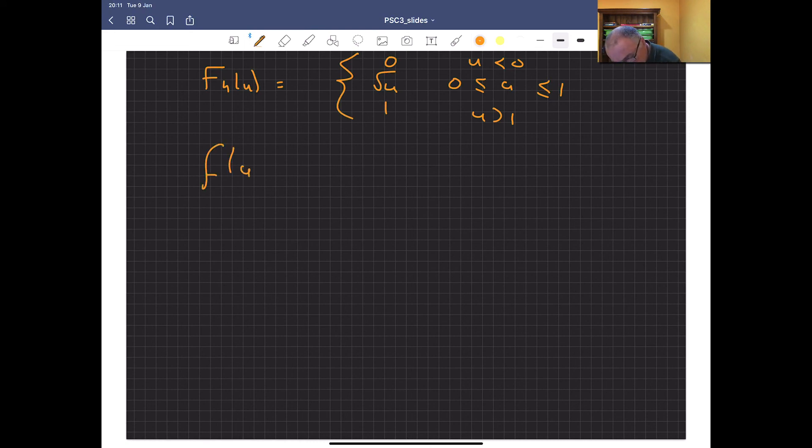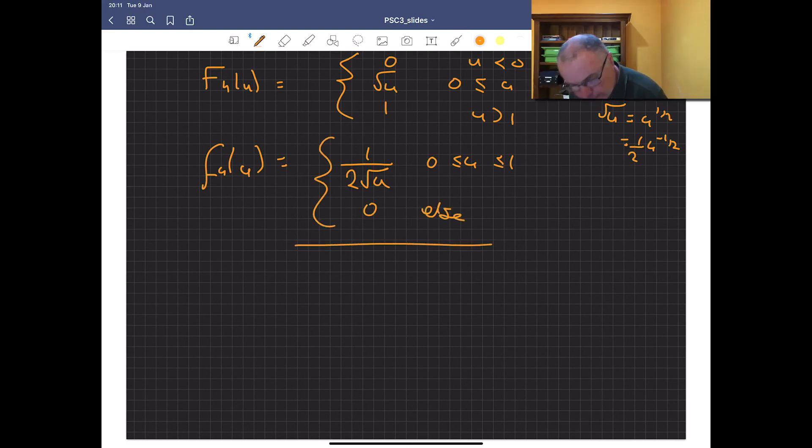And finally, let's get my PDF. I'm going to differentiate that. So we've got square root of U equals U to the half. If we differentiate that, we get half U to the minus 1 half. So it's going to be 1 over 2 root U between 0 and 1 and 0 elsewhere.